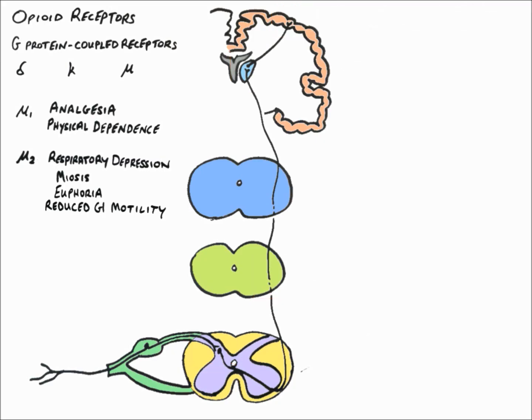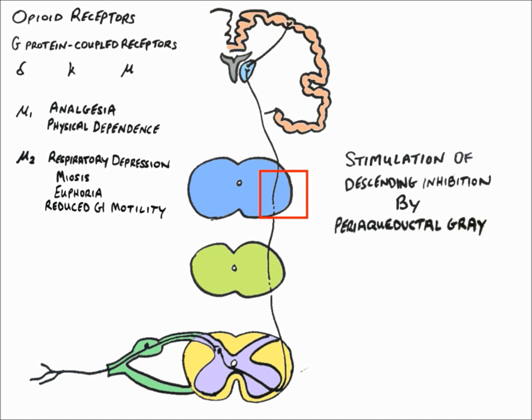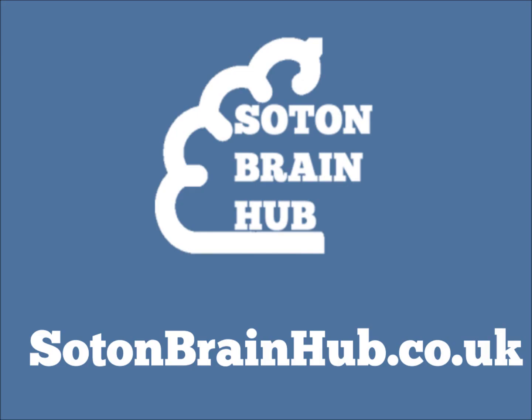In addition to this effect, the binding of opioids to opioid receptors in the periaqueductal gray of the midbrain causes stimulation of the descending inhibitory pathways, which acts to further reduce pain transmission and plays an important part in the analgesic effect of opioids.